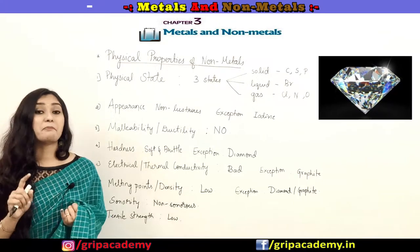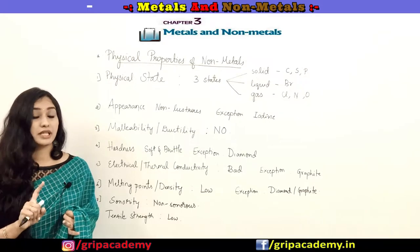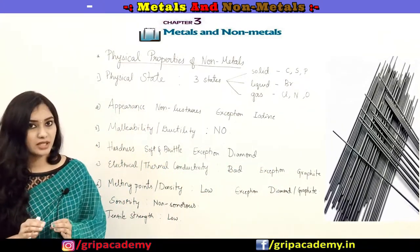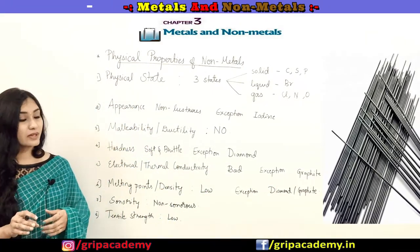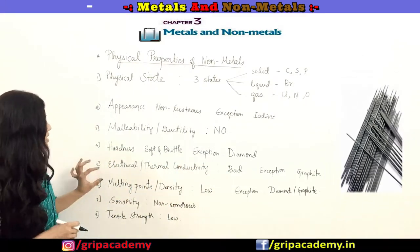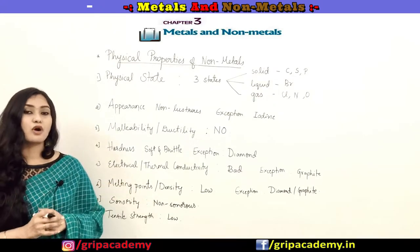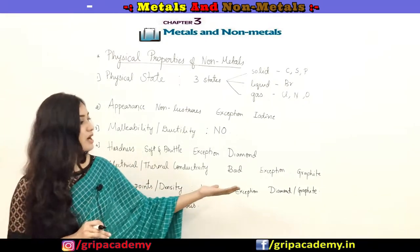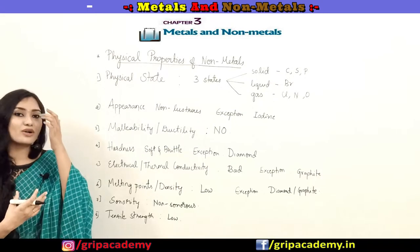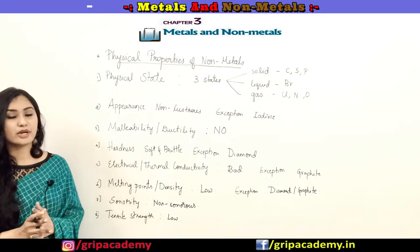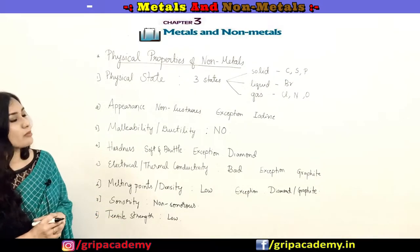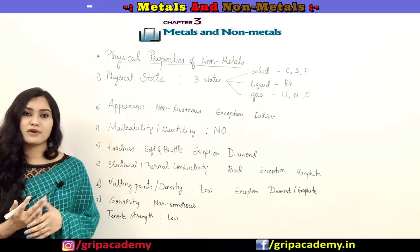All non-metals are bad conductors of electricity and heat, except graphite. Diamond and graphite are allotropes of carbon; graphite is a very good conductor of electricity — that is why carbon electrodes are essentially graphite electrodes. Non-metals generally have low density and low melting points, with exceptions like diamond and graphite which have high melting points. All non-metals are non-sonorous — they do not produce sound on striking. Their tensile strength is low, meaning they cannot bear heavy load.